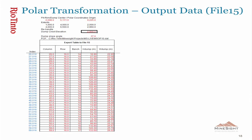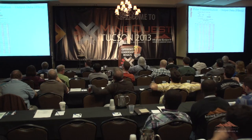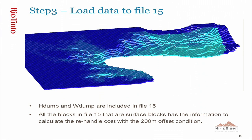Here is the output data for file 15 — what we load into file 15. You will see the column, the row, the bench, and the new items created: hdump and wdump, which are the height of the dump and the width of the dump in the re-handle slice. All these blocks in file 15 have the items hdump and wdump and carry the information to calculate the re-handle cost with the 200-meter offset condition from Geotech.